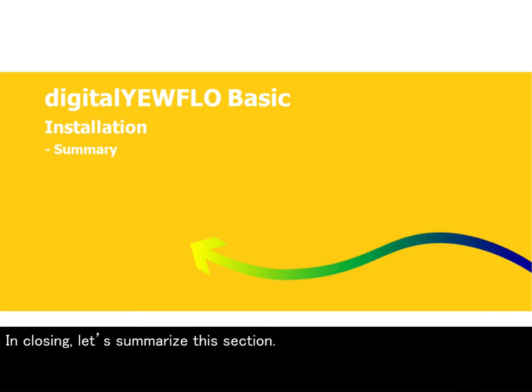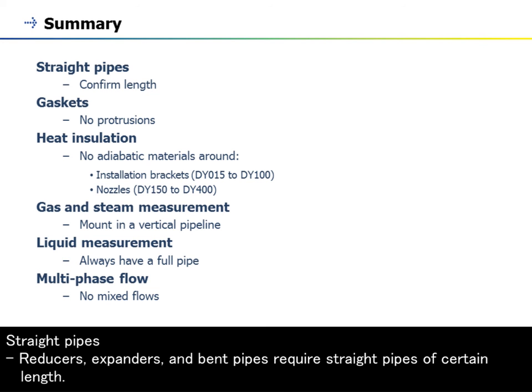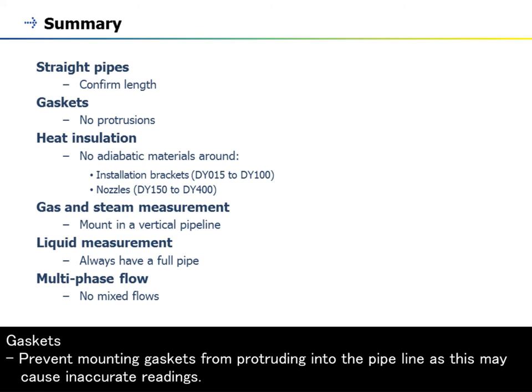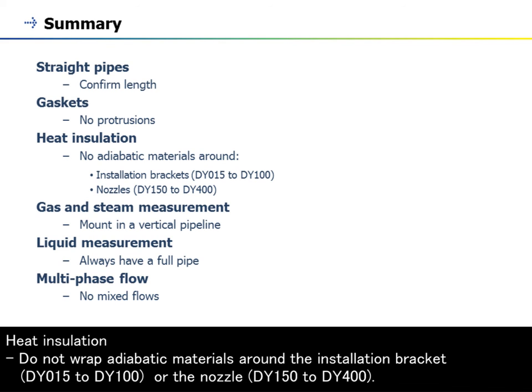In closing, let's summarize this section. Straight pipes: reducers, expanders, and bend pipes require straight pipes of certain length. Gaskets: prevent mounting gaskets from protruding into the pipeline as this may cause inaccurate readings. Heat insulation: do not wrap adiabatic materials around the installation bracket, DY-15 to DY-100, or the nozzle, DY-150 to DY-400.